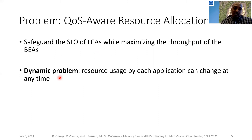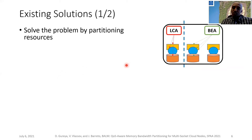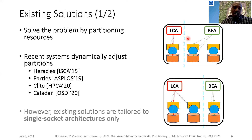This is an inherently dynamic problem, since resource usage by each application can change at any time. Existing solutions address the problem by partitioning resources — such as dedicating core partitioning, cache partitioning, and memory bandwidth partitioning — and dynamically adjusting partitions whenever resource usage shifts. However, these solutions are tailored to single-socket architectures only.